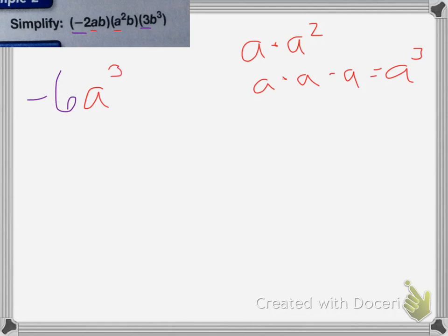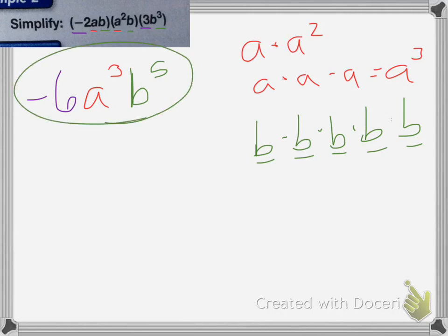And finally I have b, another b, and a b to the third power. So since I have 1, 2, 3 of those it's going to be b to the fifth power. So if I wrote that out it would be b times b and then 3 more, b times b times b. So 1, 2, 3, 4, 5 b's so it's b to the fifth power. And that's it for that one.